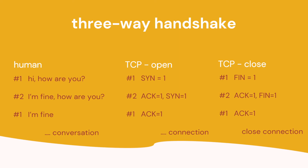TCP uses something called a three-way handshake. If two people meet they might say: 'Hi, how are you?' — 'I'm fine, how are you?' — 'I'm fine' — and then they can have the conversation. TCP does the same thing: it sends SYN=1, gets a reply with SYN=1 and ACK=1, then sends ACK=1 back. To close a connection, it does the same thing but uses FIN instead of SYN. This is the three-way handshake.